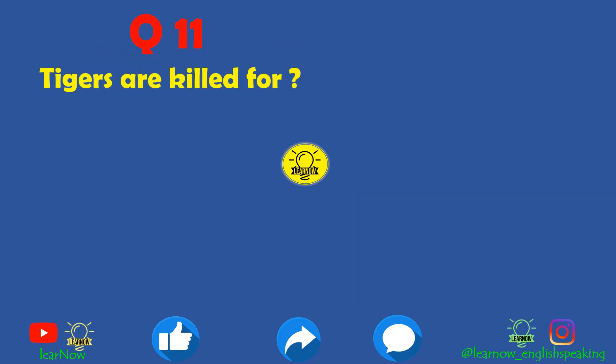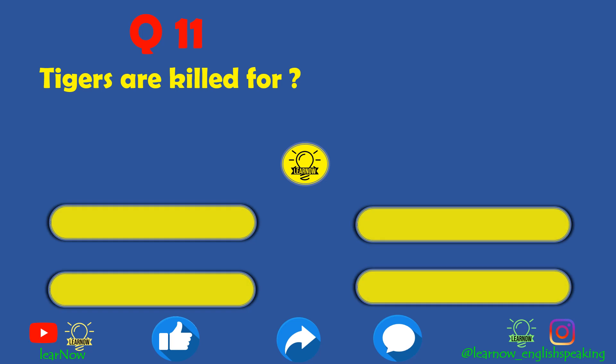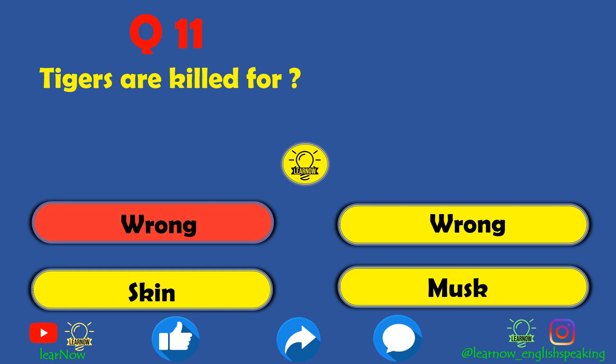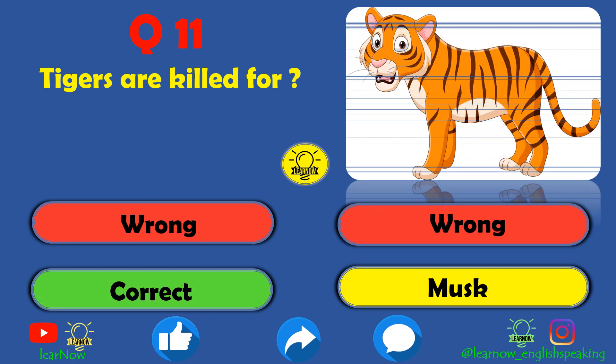Next question: tigers are killed for what? Hunters or poachers kill tigers. Tusk is wrong, horn is wrong. Skin is the correct answer — tigers are killed by hunters for their skin.